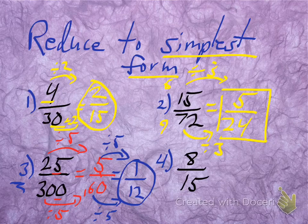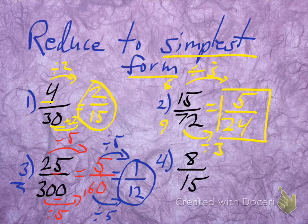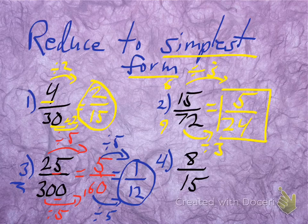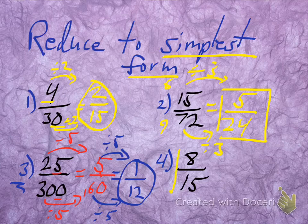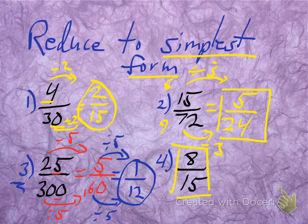What about the last one, 8/15? What goes into both 8 and 15 other than 1? That was a trick question. Nothing did. If you were looking at number four thinking 'I don't know how to reduce this,' you were exactly right. 8/15 was a trick question. It was already reduced to simplest form. Sorry, we had to do that to you.